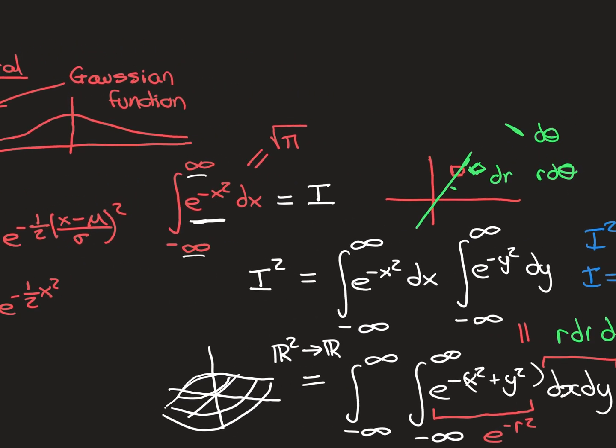That is the ingenious method Gauss discovered for evaluating this famous integral: the integral of e^(-x²) from negative infinity to infinity equals the square root of π. It's called the Gaussian integral, and it's really important in probability theory.